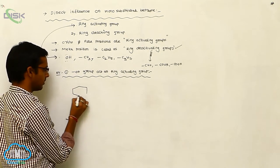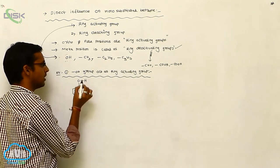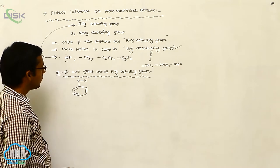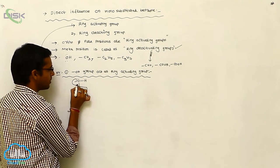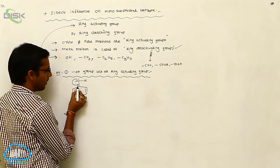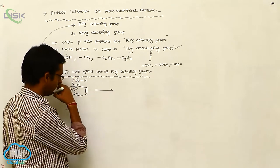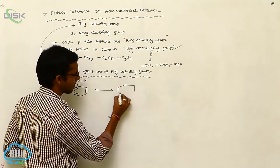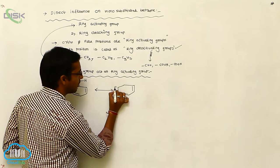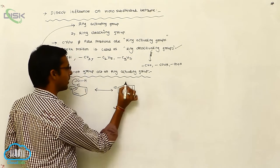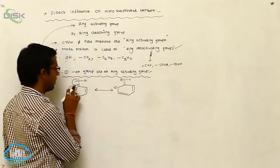On benzene, the OH group is present. This OH group is an example of a ring-activating group and contains a lone pair. This lone pair shifts toward the ring, causing the pi bond to shift towards the adjacent carbon. As a result, a negative charge develops on the ring carbon, and a positive charge develops on oxygen.